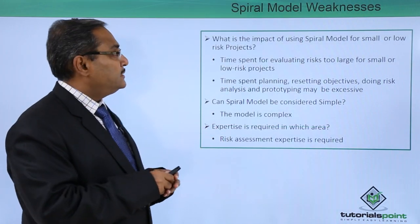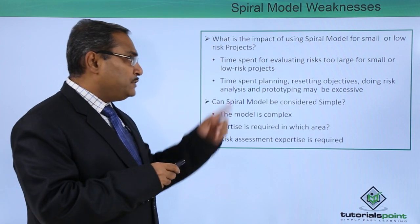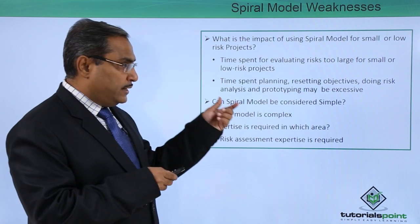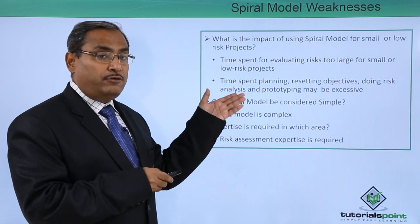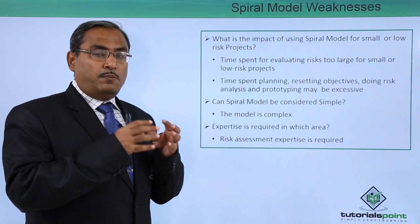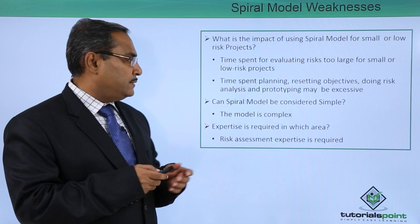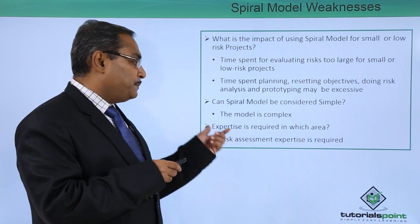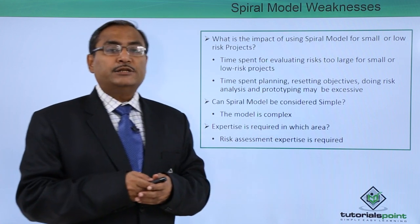Now discussing SPIRAL model weaknesses: for small or low-risk projects, time spent evaluating risks is too large. Time spent planning, resetting objectives, doing risk analysis, and prototyping may be excessive — these are the disadvantages and drawbacks of this SPIRAL model. Judging and doing the risk analysis and finding the most risky component to implement first, along with prototyping, will be extra overhead. The model is also complex and risk assessment expertise is highly required for the proper implementation of the SPIRAL model.